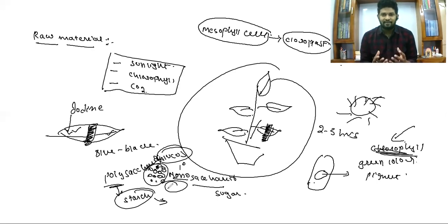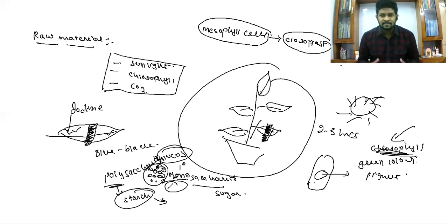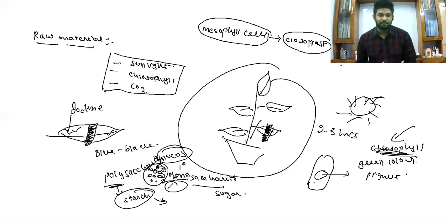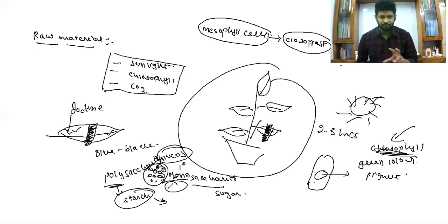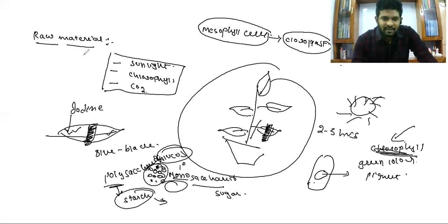That's why the portion which is exposed to sunlight, which consists of starch, shows blue-black color when reacted with iodine. Whereas the portion which is not exposed to sunlight does not synthesize any starch granules because there is no photosynthesis happening there. So that portion doesn't show any discoloration.